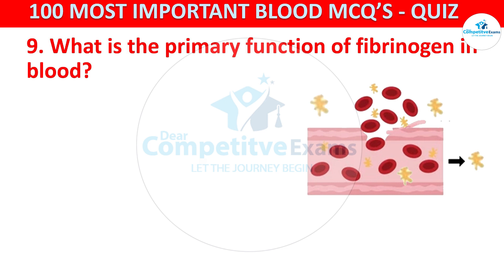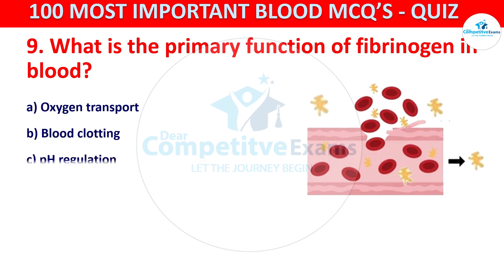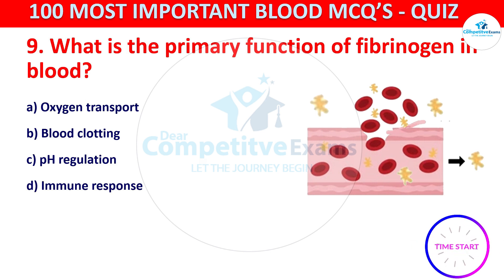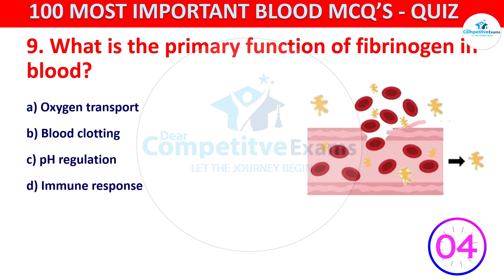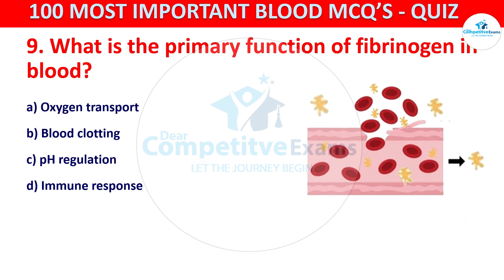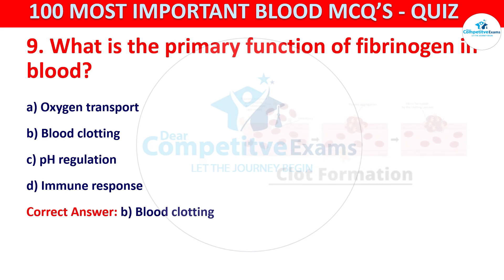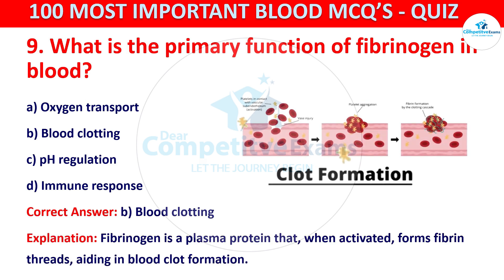Your options are oxygen transport, blood clotting, pH regulation, or immune response. The correct answer is blood clotting. Fibrinogen is a plasma protein that, when activated, forms fibrin threads aiding in blood clot formation. Question number ten: which blood cells lack a nucleus and most organelles?